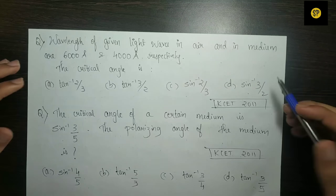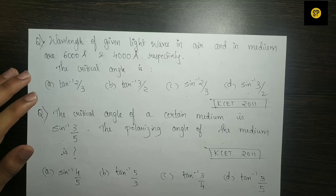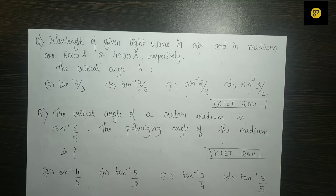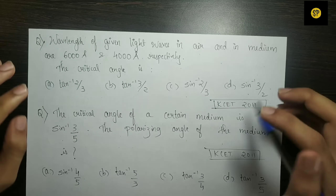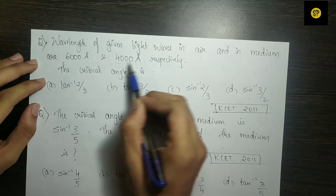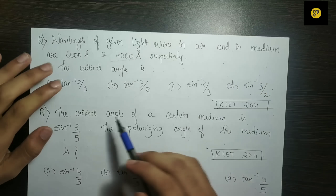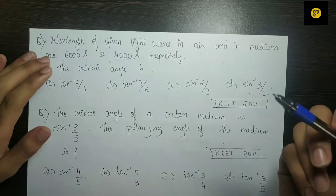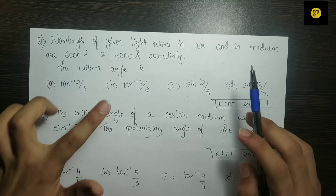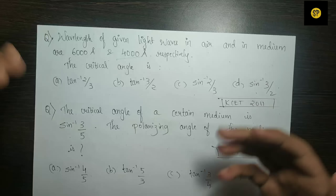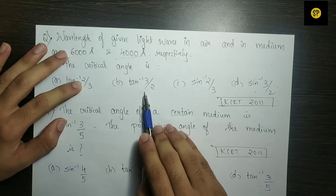Reading the formula: the refractive index mu equals 6000 by 4000, which gives 3 by 2. The critical angle is sine inverse of 2 by 3. Looking at the four options — tan inverse 2/3, tan inverse 3/2, sine inverse 2/3, sine inverse 3/2 — the answer should be sine inverse of 2/3.